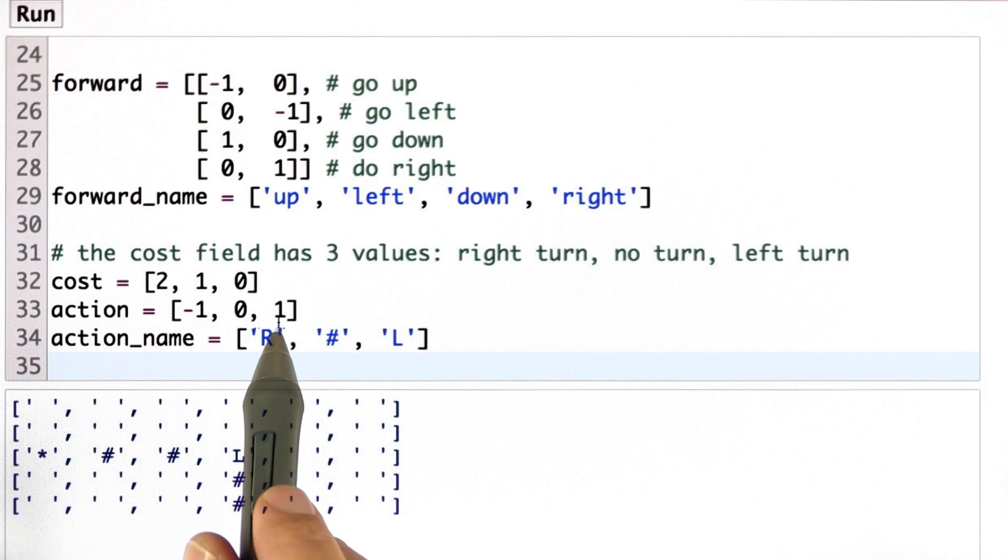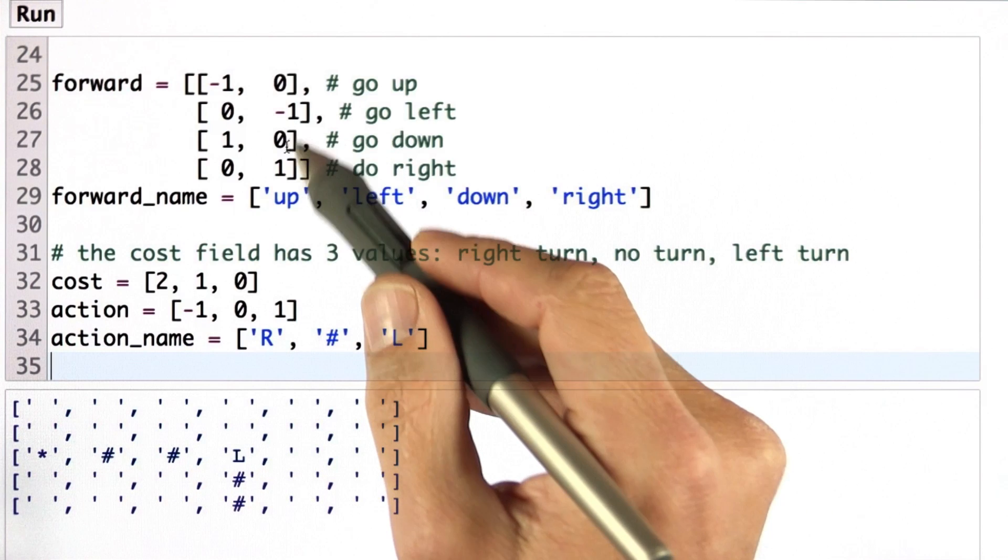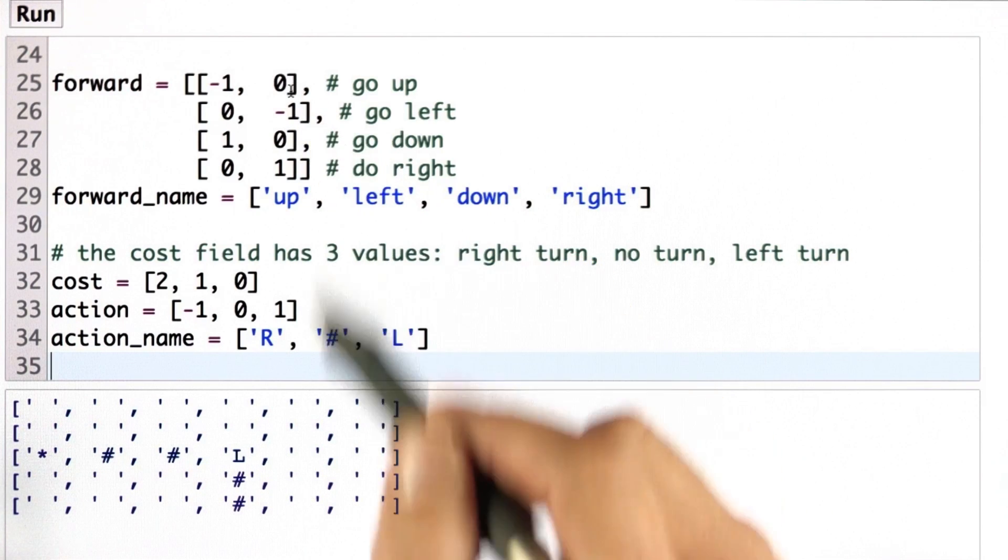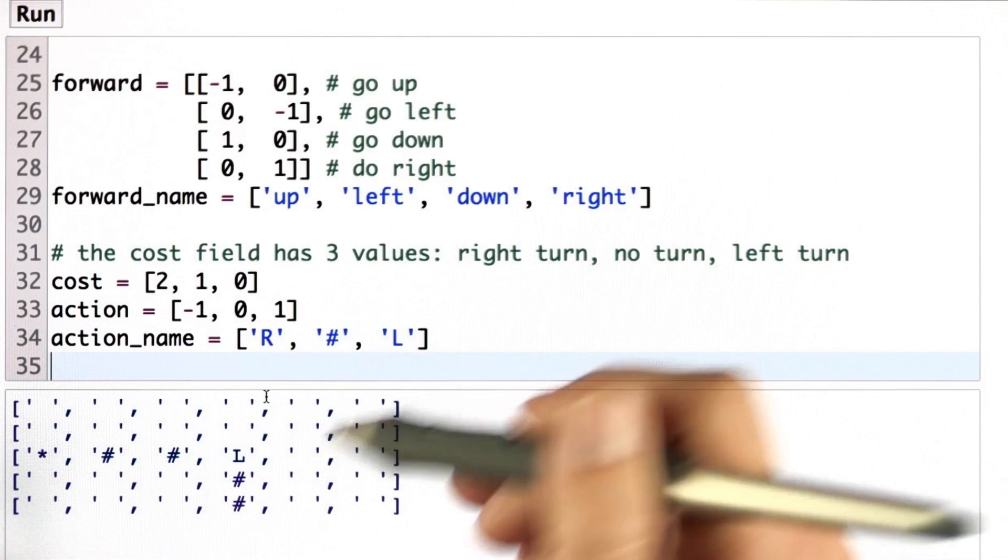And this thing here is interesting. As actions, we have three actions. We can add to the index orientation minus 1, 0, or 1. If we add minus 1, we jump one up in the cyclic array over here, which is the same as doing a right turn.